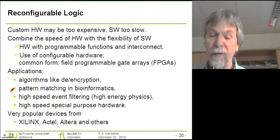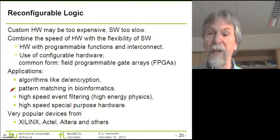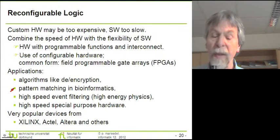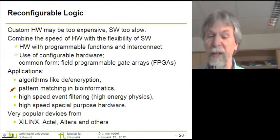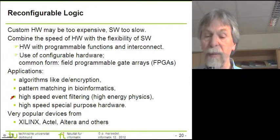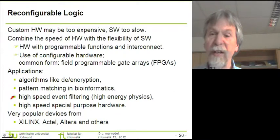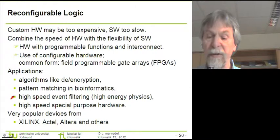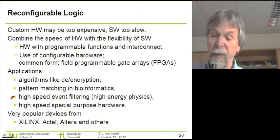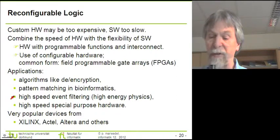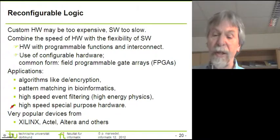Indeed, some of the most cost-effective devices for breaking codes consist of FPGAs. Also in bioinformatics we need a lot of pattern processing, and this pattern processing can be done in parallel, so FPGAs also find applications in bioinformatics. FPGAs are also very fast, inheriting this feature from application-specific hardware. Therefore we can use them in applications where very high performance is required, such as high energy physics.